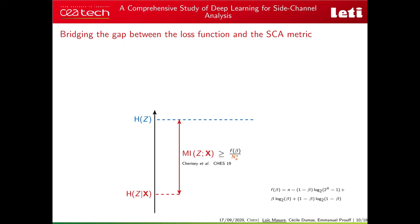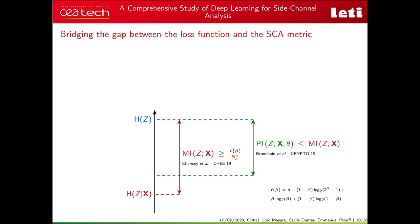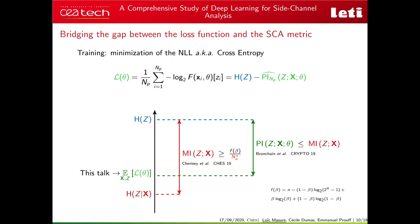So we have a link between NA*, our SCA metric, and the mutual information. Unfortunately, computing the MI requires perfect knowledge of the leakage model, which is not the case here. Instead, the SCA community has introduced the notion of PI — perceived information — which extends mutual information but considers a non-perfect leakage model given by model F parametrized by θ. An important property is that PI is always lower than MI. The core contribution of this paper is that the PI can be expressed from the negative log-likelihood loss function widely used in deep learning.